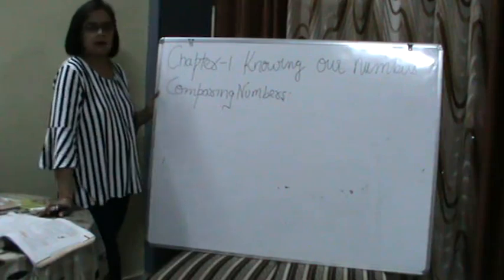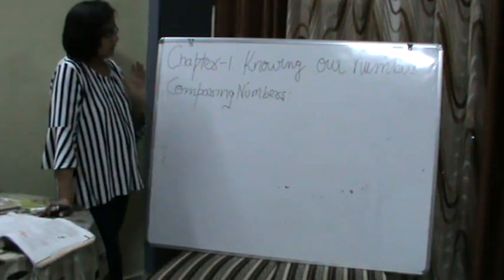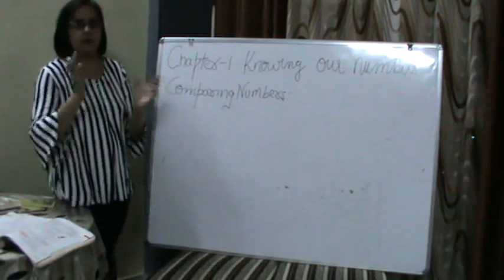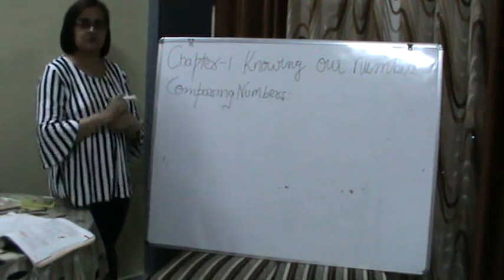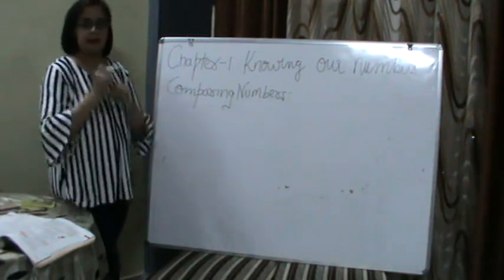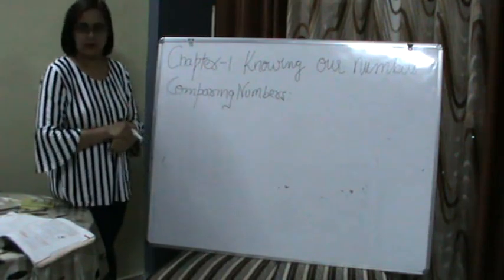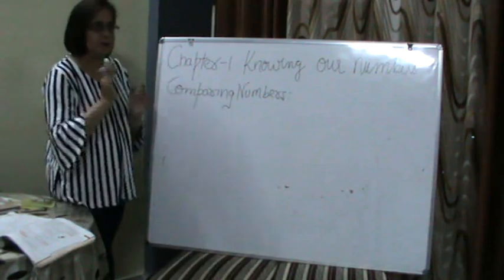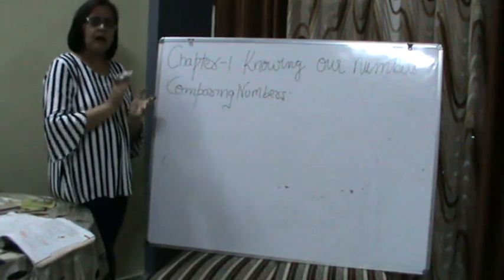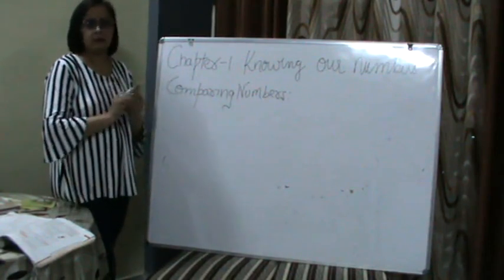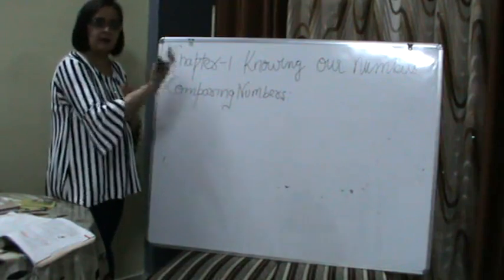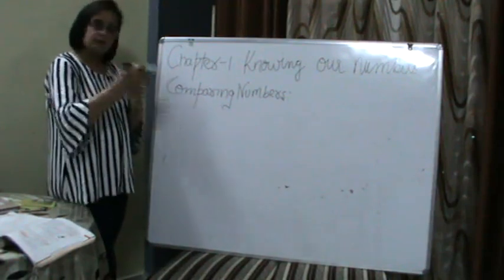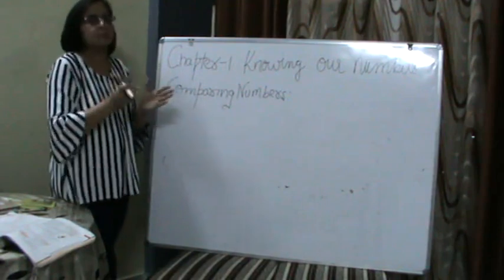Our heading is Comparing Numbers. Comparing Numbers means to compare, tulna karna, between two numbers or four numbers — which one is the biggest and which one is the smallest. You have studied about these things in class 4th and class 5th as well. What I try to do is, our previous course will be revised side by side, because that is the base of a topic.